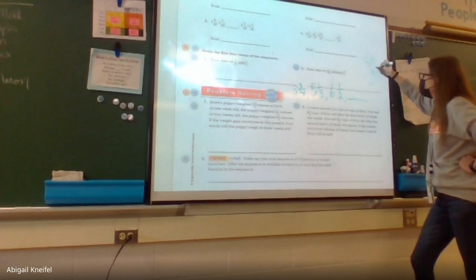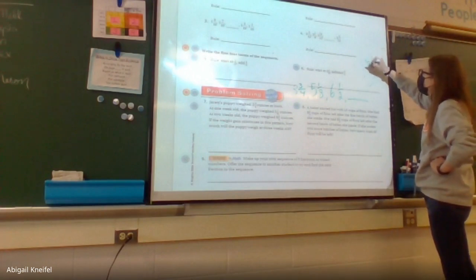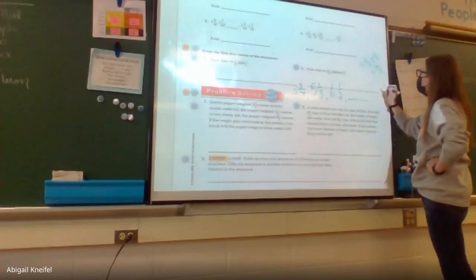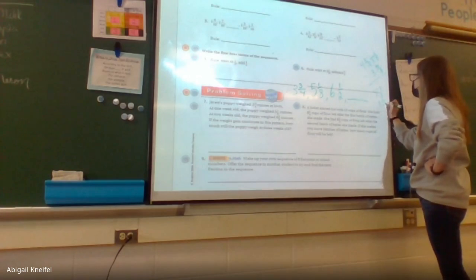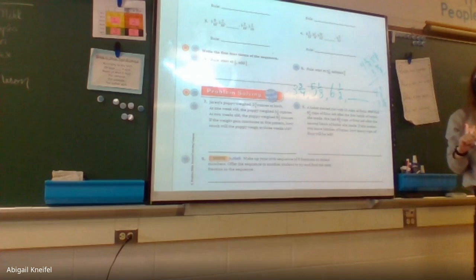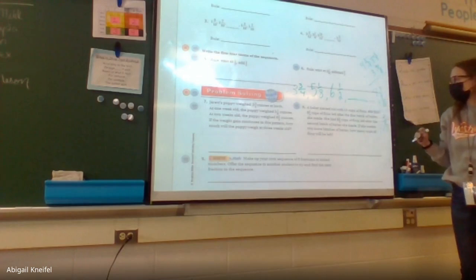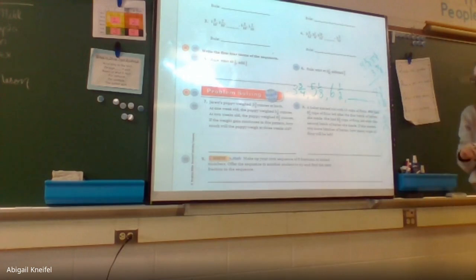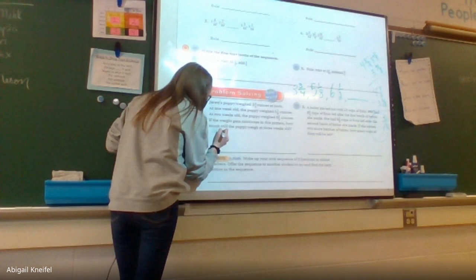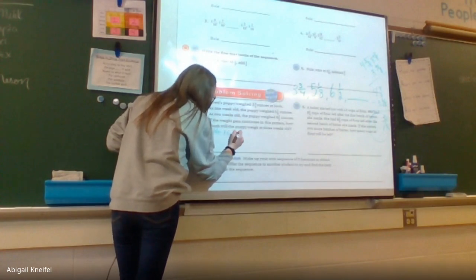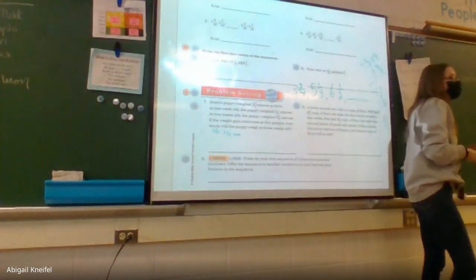I don't need to change my top fraction, but I do need to change three fourths: three becomes six eighths. Can I take six away from one? No — so I borrow. Five becomes four, and I add eight eighths. New problem: four and nine eighths minus three and six eighths. Nine minus six is three; four minus three is one. The puppy grows one and three eighths ounces each week — that's the rule.